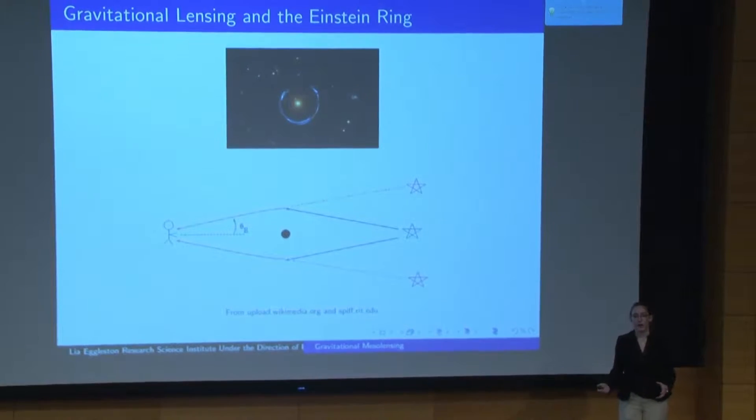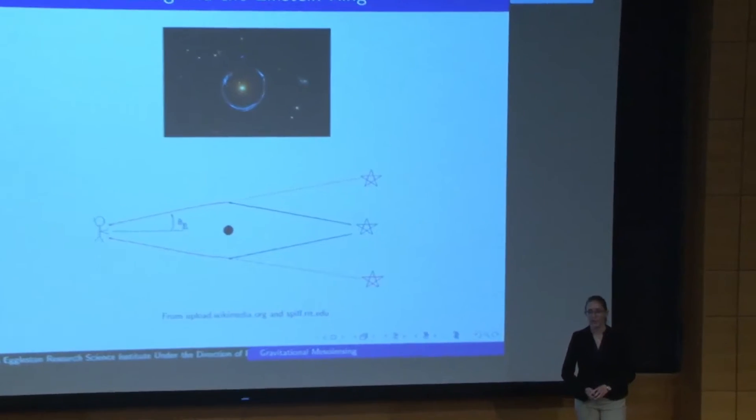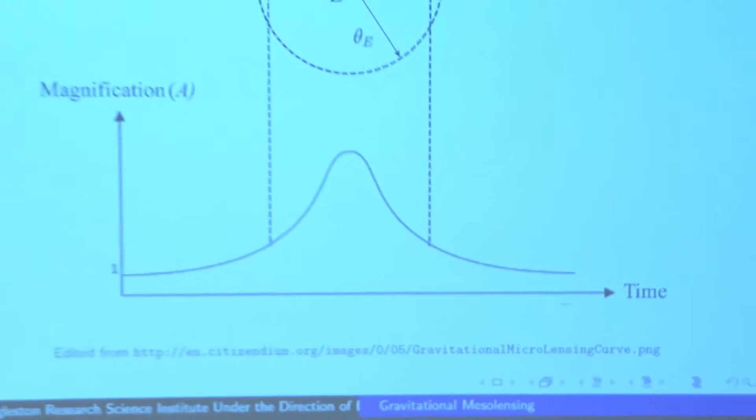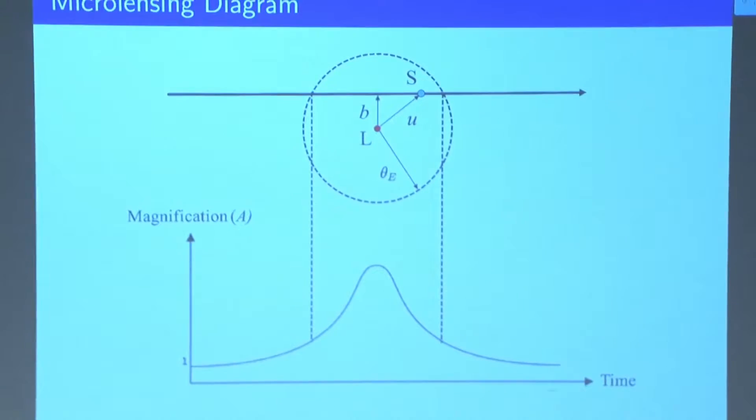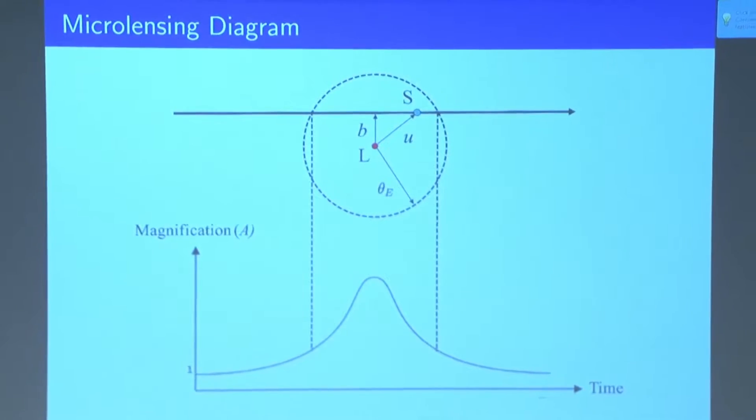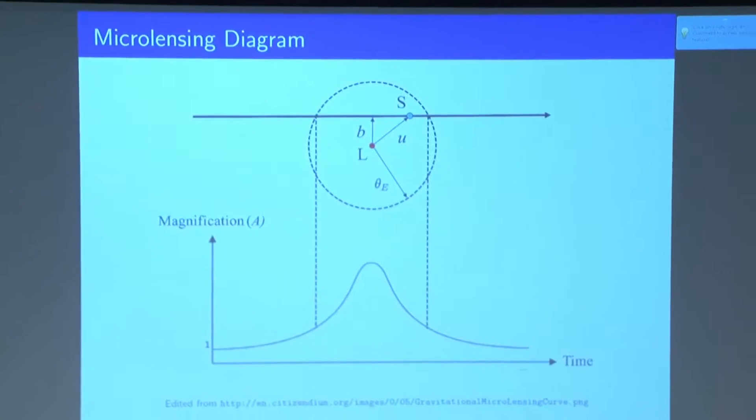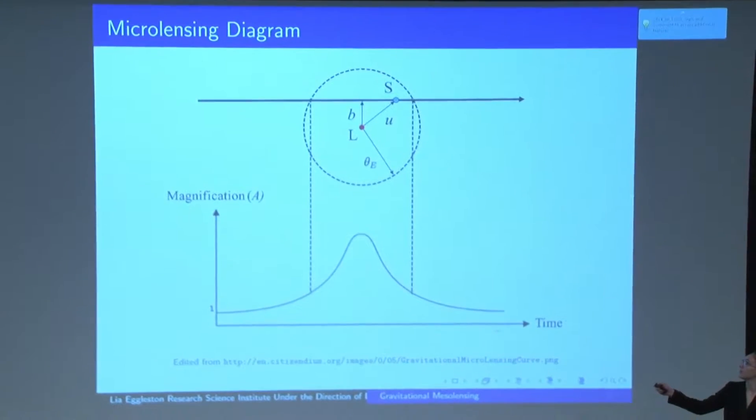So I'm actually in this project looking at a specific type of lensing called microlensing, where the Einstein ring is actually too small to see. But we see the effects of the lensing as an increase in brightness coming from the background source. So when the lens and source are moving relative to each other, we can actually observe microlensing events, where the magnification in the light coming from the source is a direct function of the distance between the lens and the source.